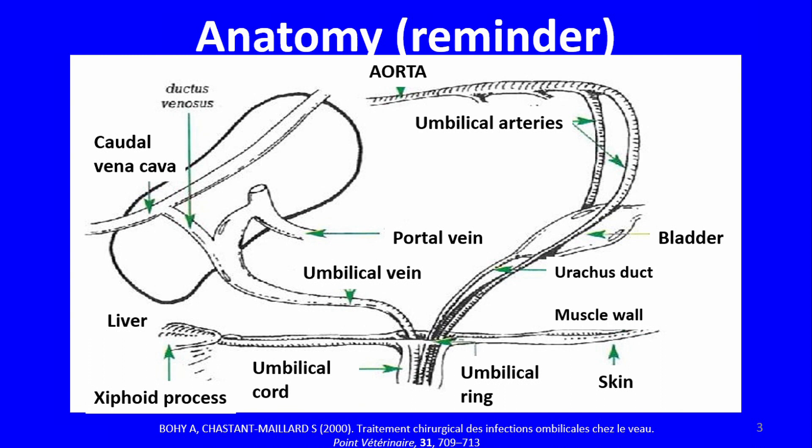We are going to deal with umbilical disorders, and as you all know, umbilical disorders are the consequences of embryonic and then fetal blood circulation. The structures of interest are the umbilical vein, driving blood to the liver and the vena cava, and backwards, the two arteries and the urachus duct. This is normal circulation, and normally within a few days after birth, these structures become atelic.